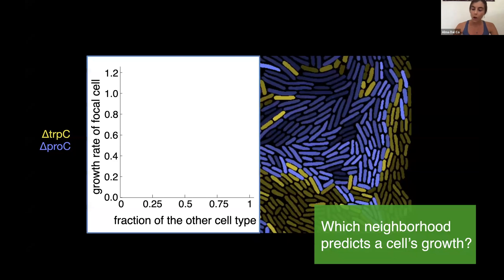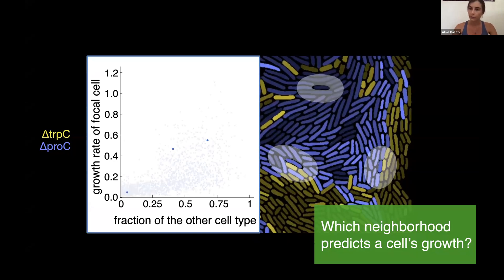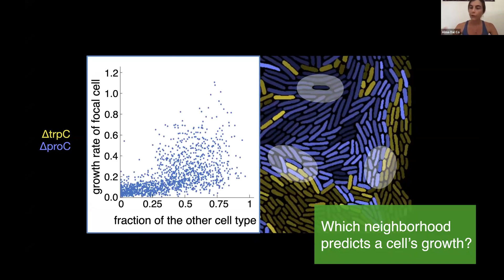So we focus on individual cells and we analyze the composition of the neighborhood with a fixed range. We can plot the growth rate of the cell and the fraction of the partner type, the one from which the cell received the amino acid, the fraction within this fixed neighborhood. If we repeat this for many cells, we obtain a scatter plot which tells us that cells tend to grow faster when they are surrounded by the partner. And we can also calculate a correlation score, Spearman correlation score.